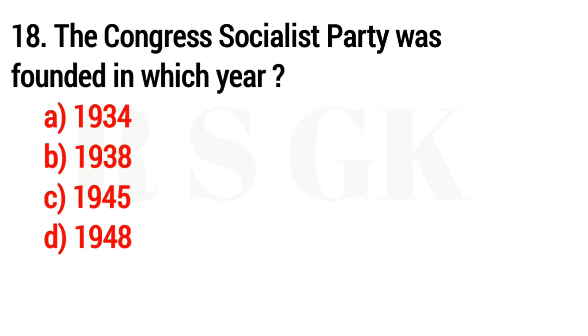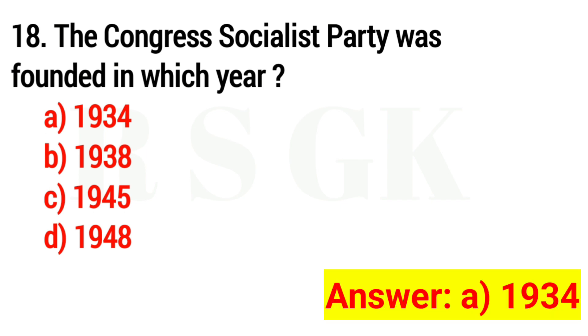Question 18. The Congress Socialist Party was founded in which year? The answer is option A: 1934.